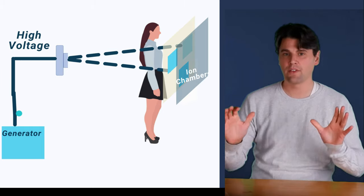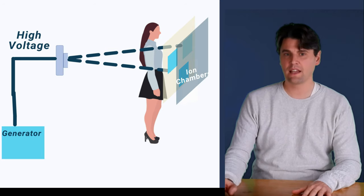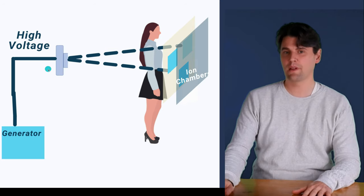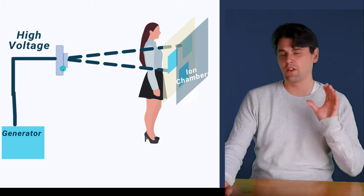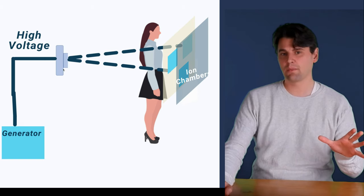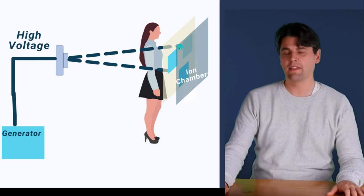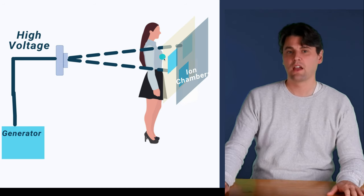In our x-ray tube, you have the generator which is providing your high voltage to the tube itself. Then the x-rays are going to be generated within the tube and out comes a beam of x-rays, which would be shown here for instance.